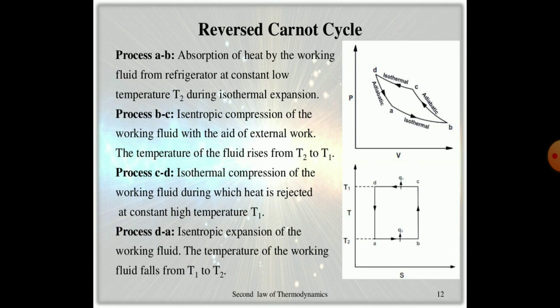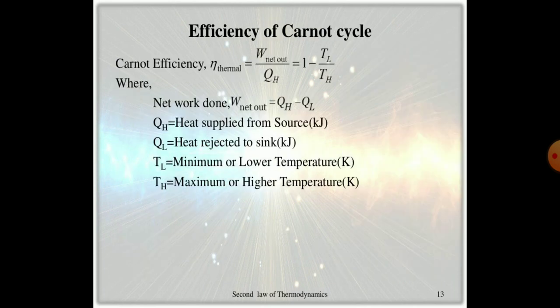Isentropic expansion of the working fluid decreases temperature from T1 to T2. The efficiency of the Carnot cycle can be calculated using the formula: net work done divided by total heat supplied. We denote total heat with capital Q and low temperature with T.